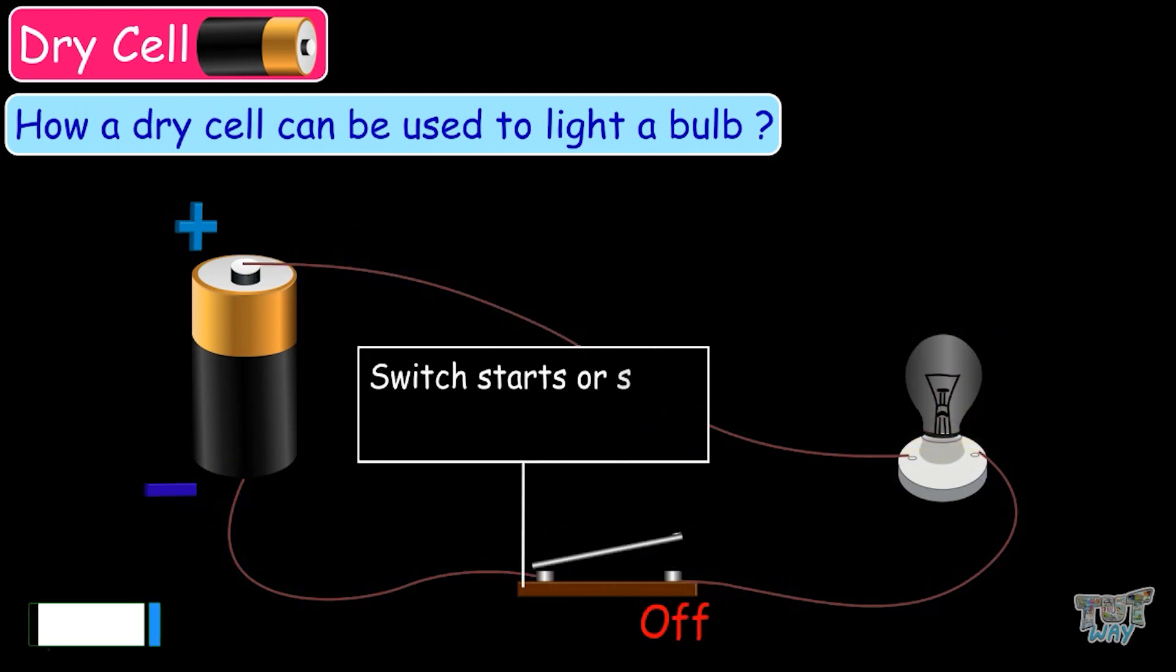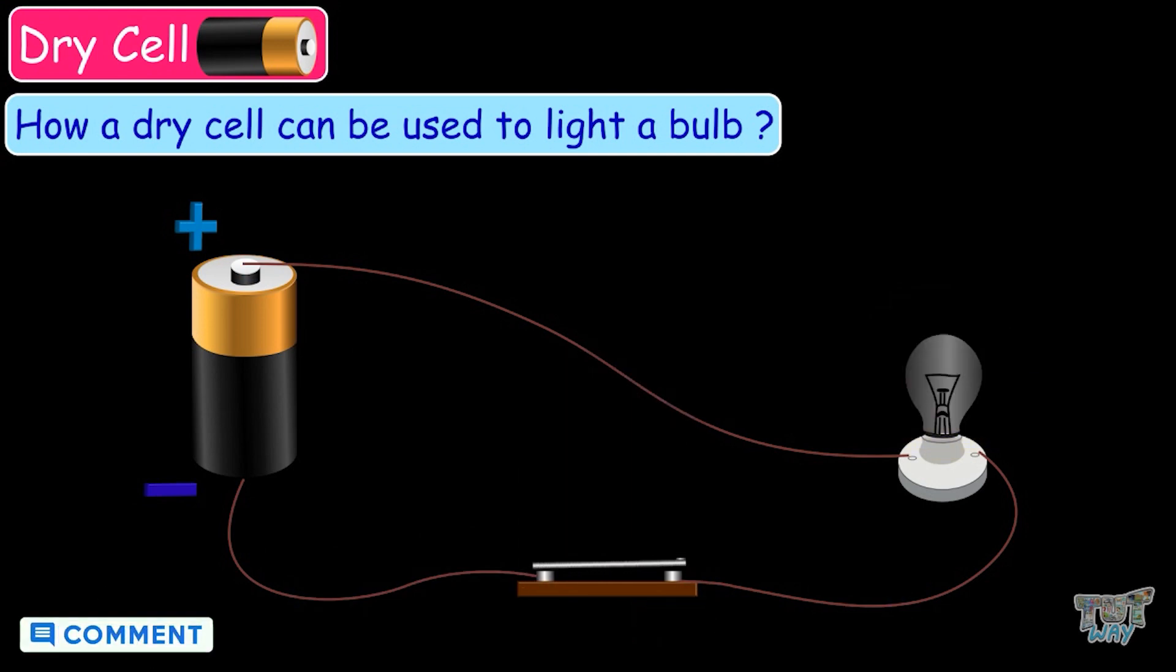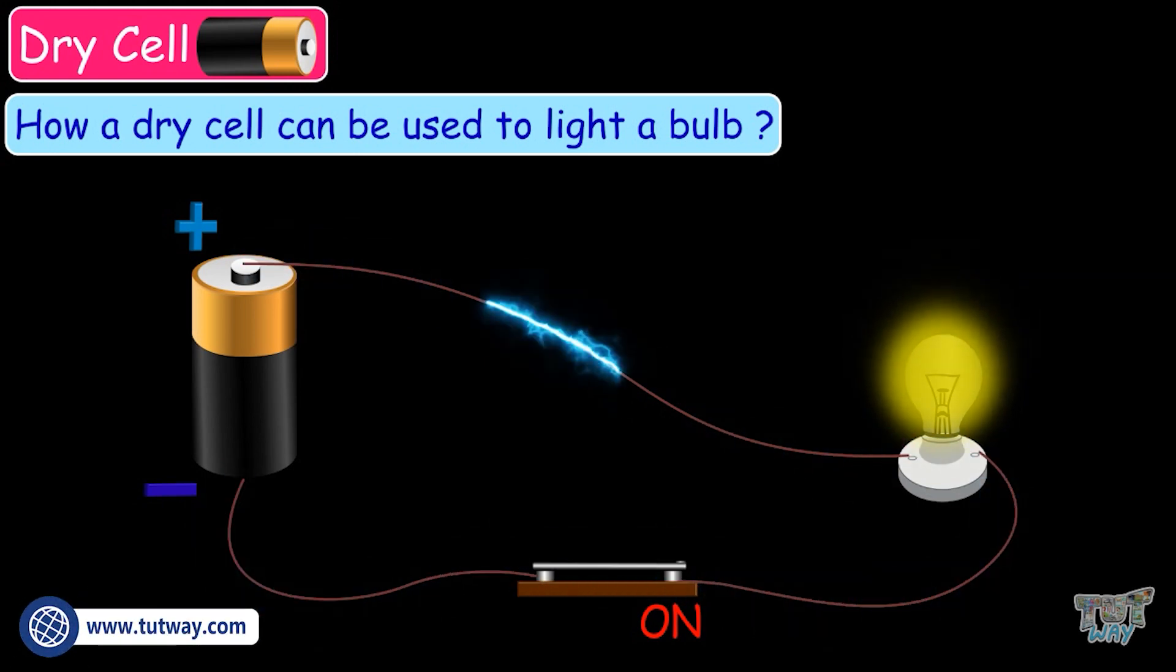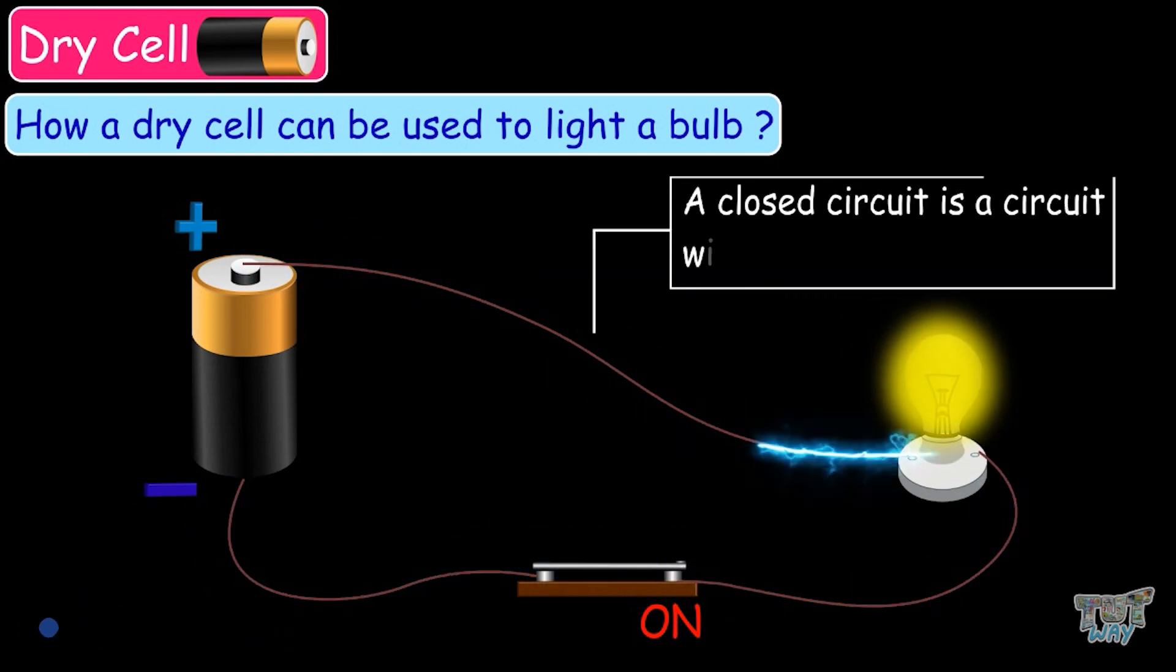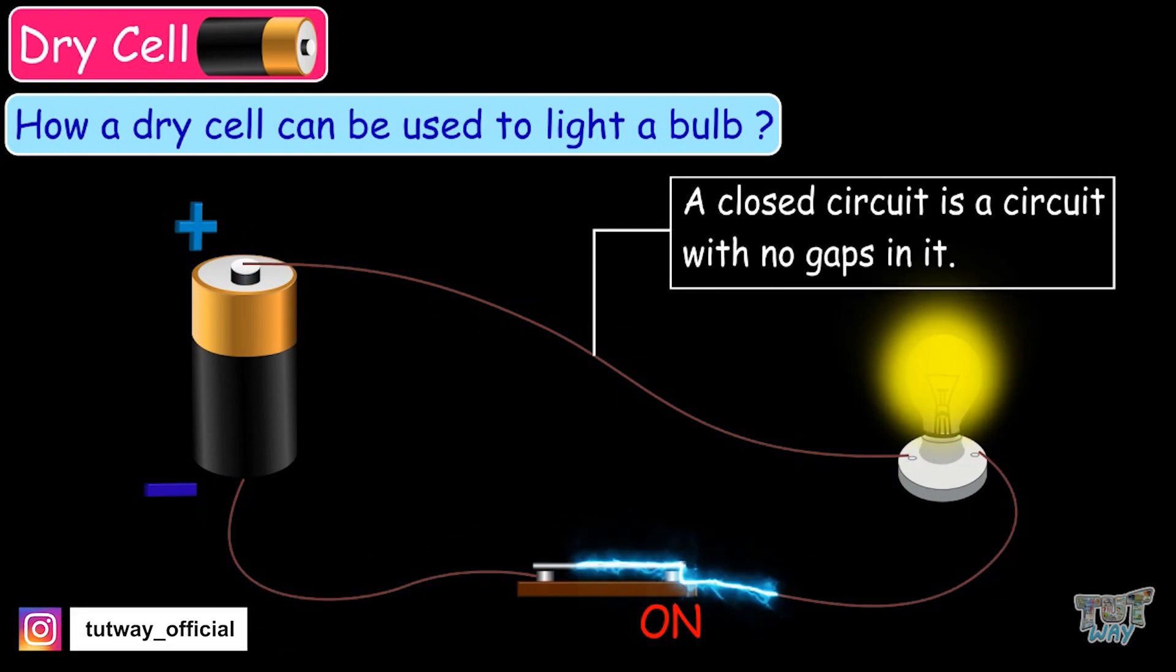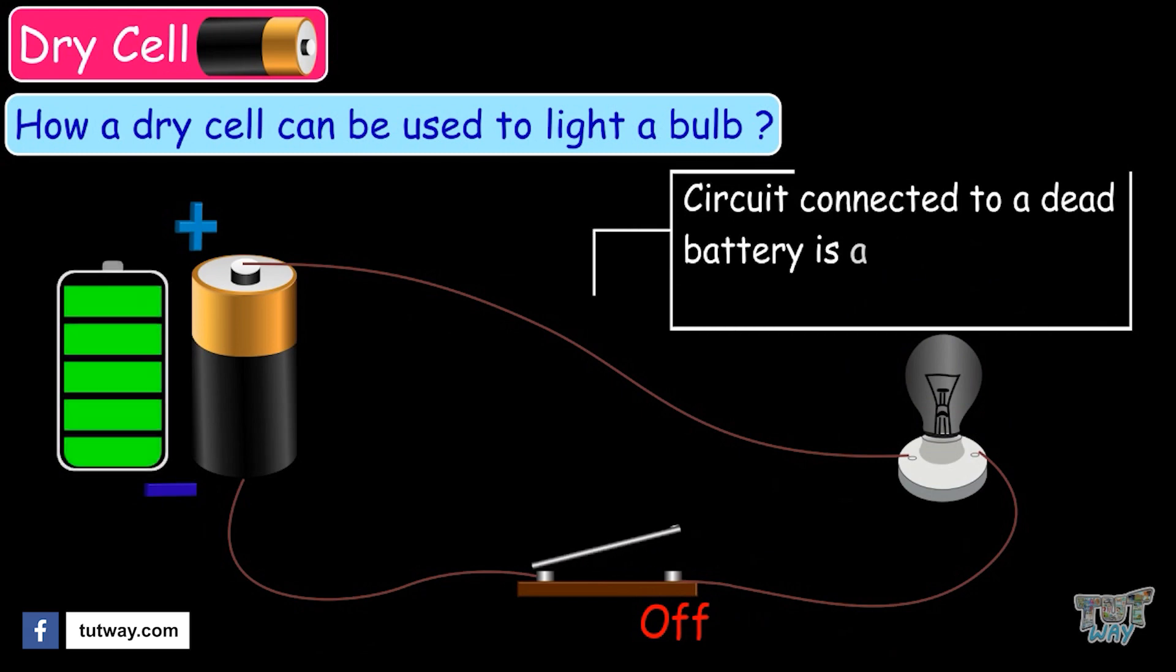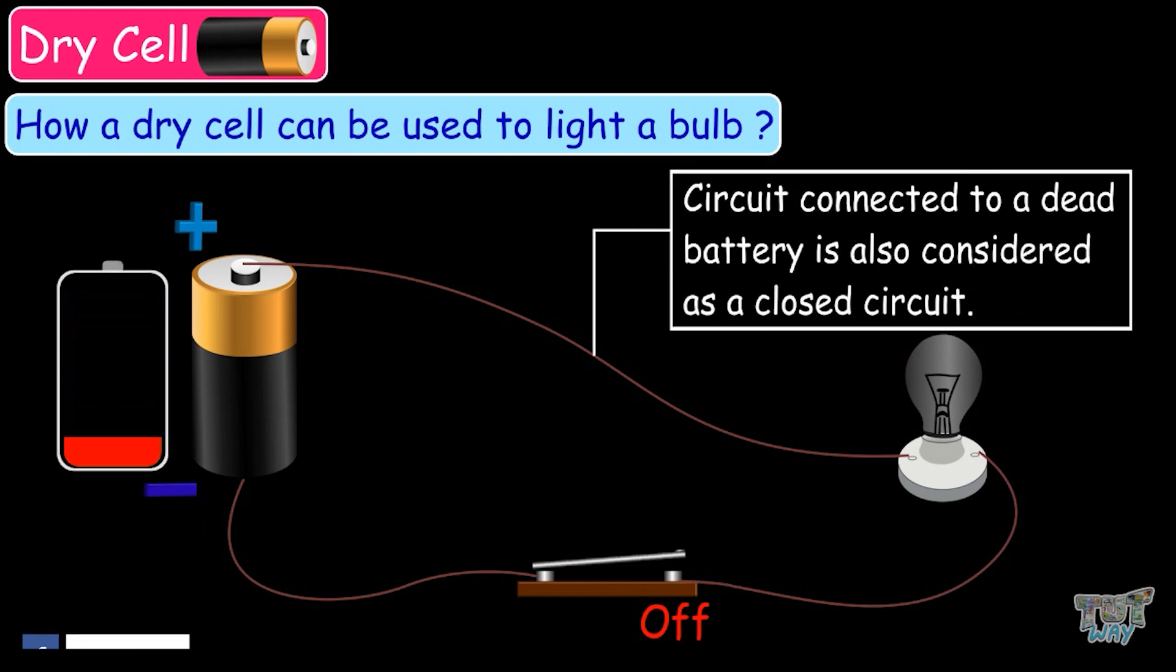We also have a switch that starts or stops the flow of electrons in the circuit. When the switch is closed, or on, the circuit is complete, and the current starts flowing through the circuit. Thus, a closed circuit is a circuit with no gaps in it. The circuit connected to a dead battery may not perform any work, but is still considered as a closed circuit.